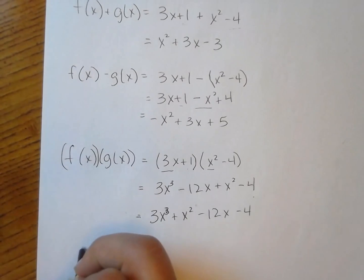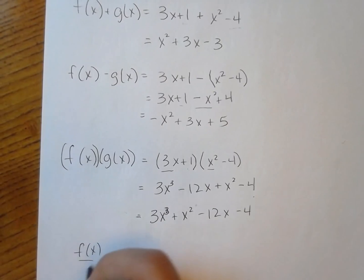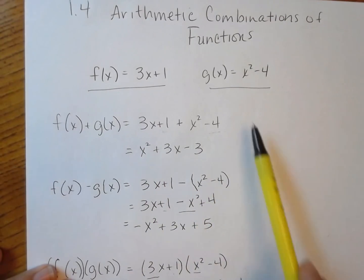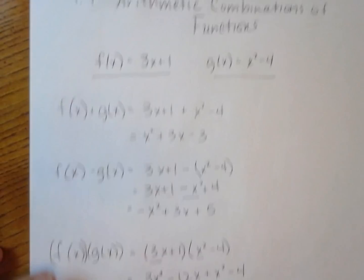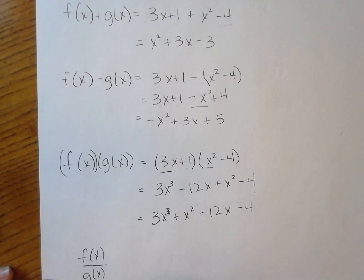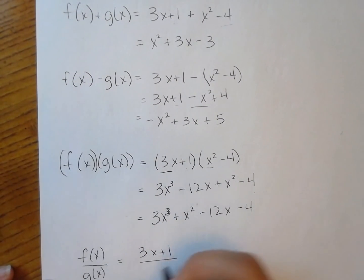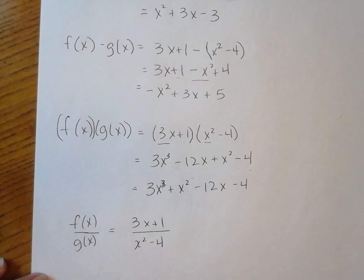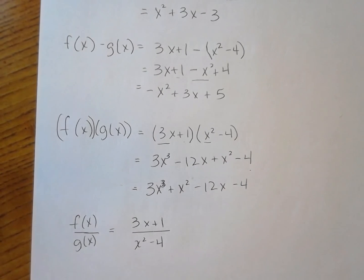Now let's take f(x) divided by g(x). I have f which is 3x plus 1, and g which is x² minus 4, so f divided by g gives me (3x + 1) / (x² − 4). There's nothing else I can do with that — there are no like terms in the numerator or denominator.